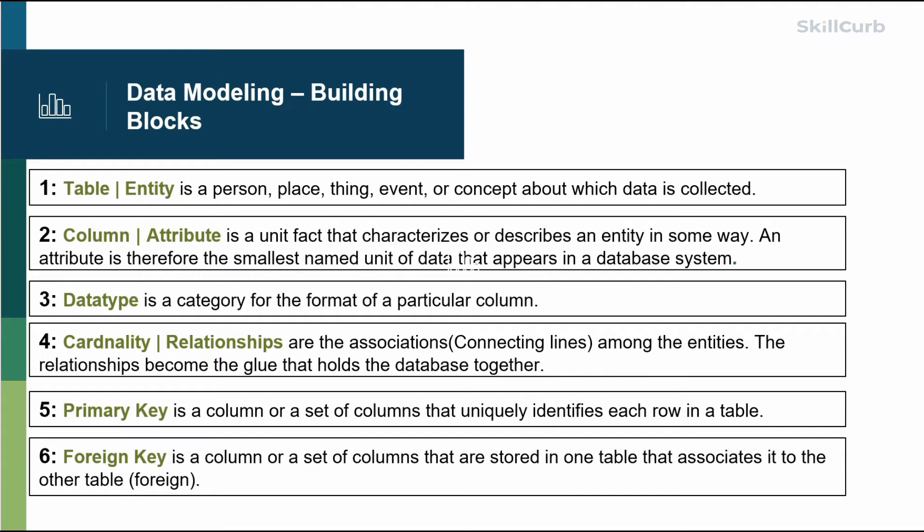You can use these names interchangeably. A table can be something for which you want to store data or collect data. Examples can be customer - you want to collect data about a customer, its behavior. It can be automobile - the type of cars going on a particular highway. It can be products, so anything that you want.